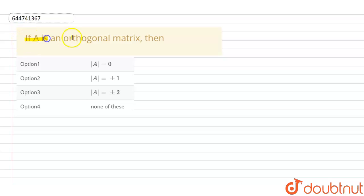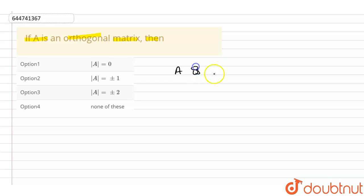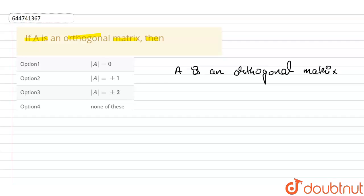In this question, we are given that A is an orthogonal matrix, and we need to determine which of the given options is correct.